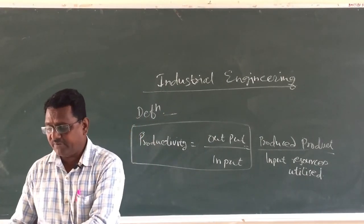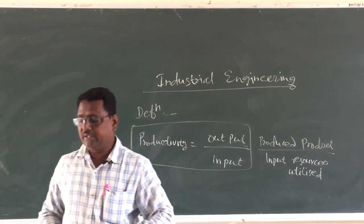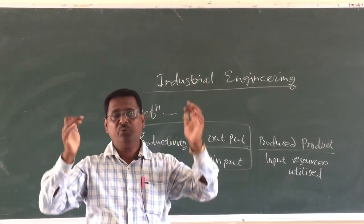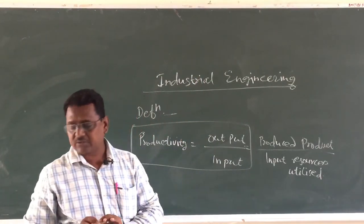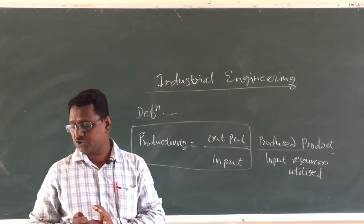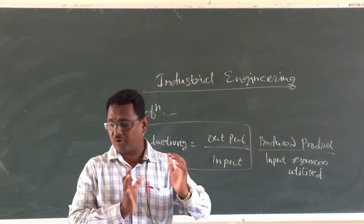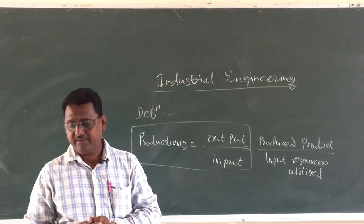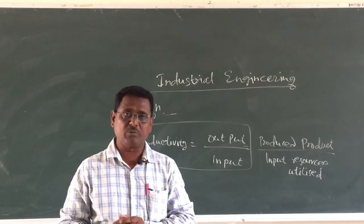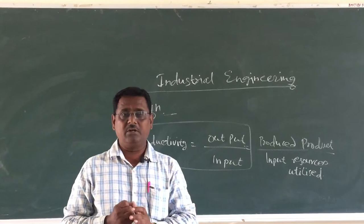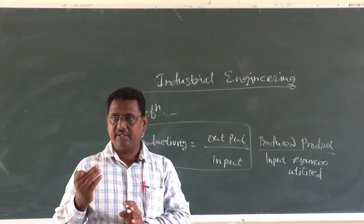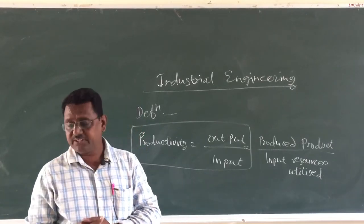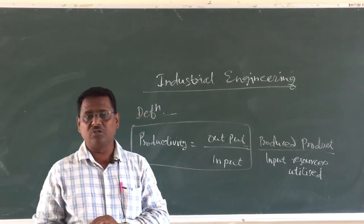How to improve productivity? There are factors affecting productivity. Basically in an organization there are two types of factors. The first is internal factors, also called controllable factors — those within the premises of the organization. These include product factors or cost-benefit factors, related to increasing benefit at the same cost or reducing cost for the same benefit. Plant and equipment are a major resource; any technical problem with equipment reduces productivity. If the technology used is traditional, it will also affect productivity.